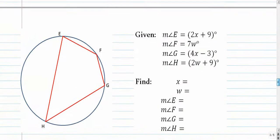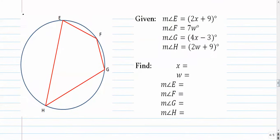Moving on, we are at number 3. All right, a lot of algebra going on here. Let's put 2x plus 9 right here. 7w right here, 4x minus 3 right here, and 2w plus 9 right here.